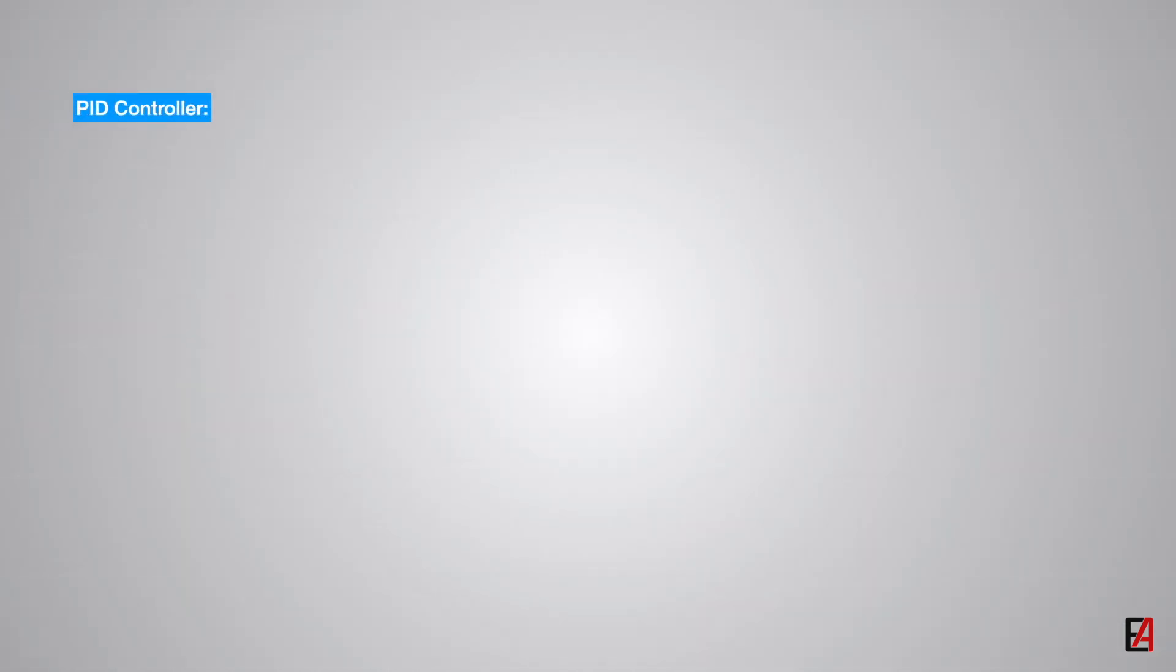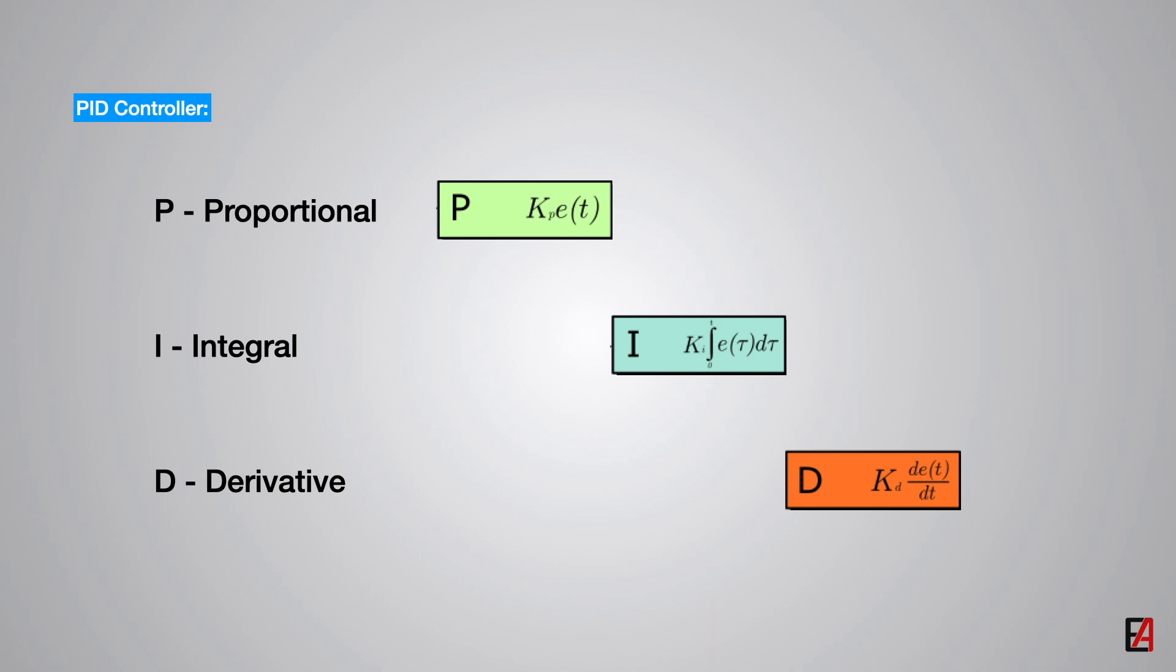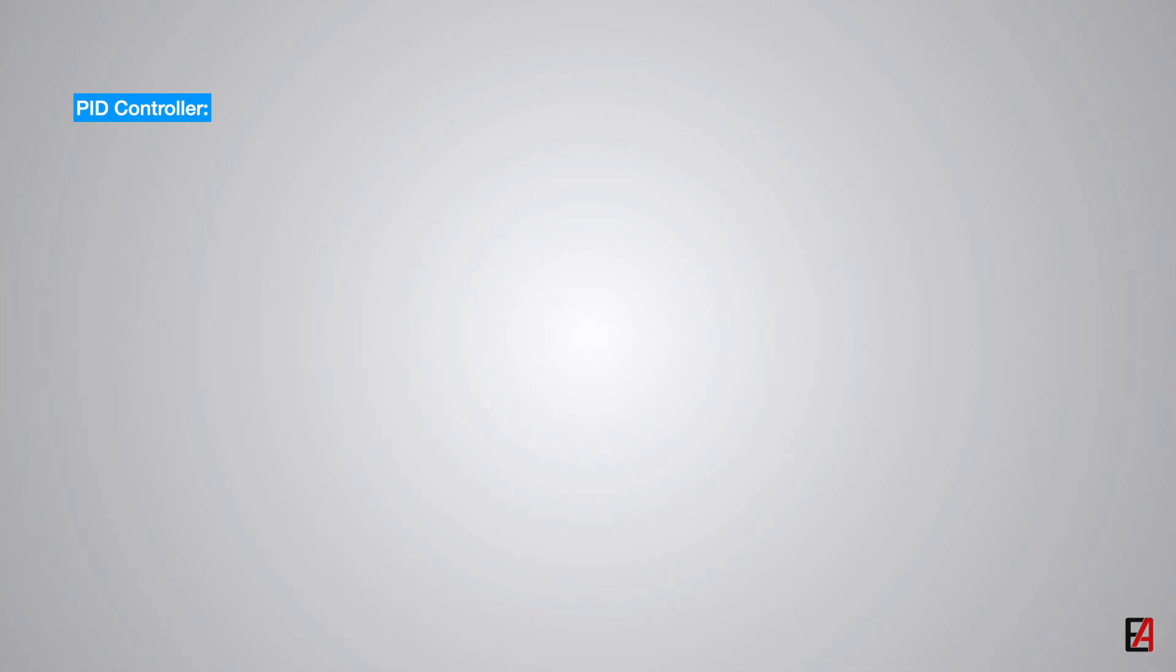The term PID stands for P proportional, I integral, and D derivative. We will see in detail about each of these parameters and how it affects the control system.